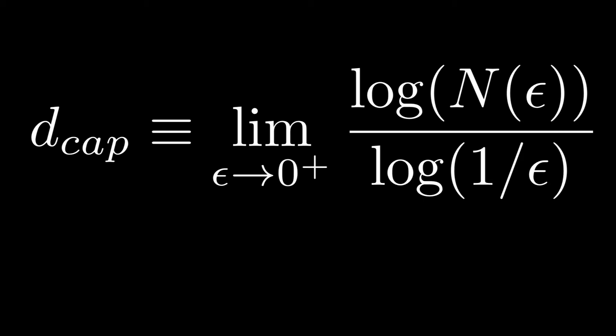The idea with this is that you're covering your object with balls of size epsilon, or boxes of side length epsilon, and determining how many boxes it takes for each given epsilon. Remember with this formula, epsilon is the side length of each of the boxes, and N(epsilon) is the number of boxes of side length epsilon it takes to cover an object.